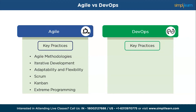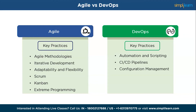Some key skills and knowledge areas associated with DevOps include automation and scripting — proficiency in scripting languages like Bash, Python, or PowerShell is essential for automating routine tasks, infrastructure provisioning, and deployment processes. Next, CI/CD pipelines: setting up and managing continuous integration and deployment pipelines. And configuration management: managing and automating the configuration of systems and applications.